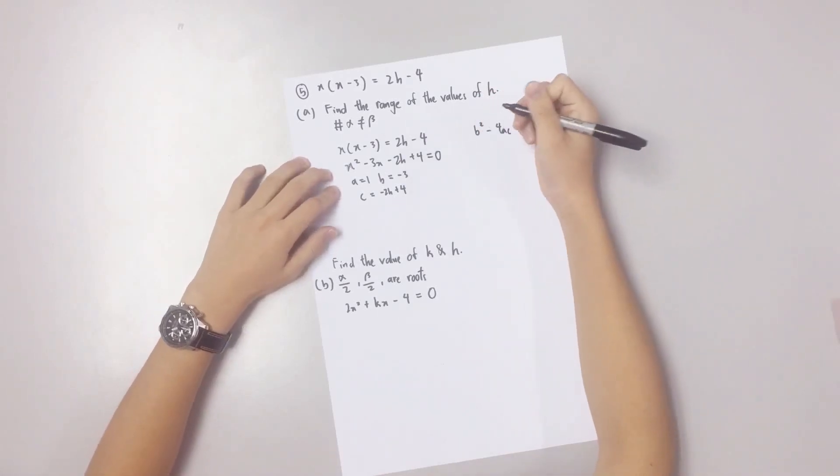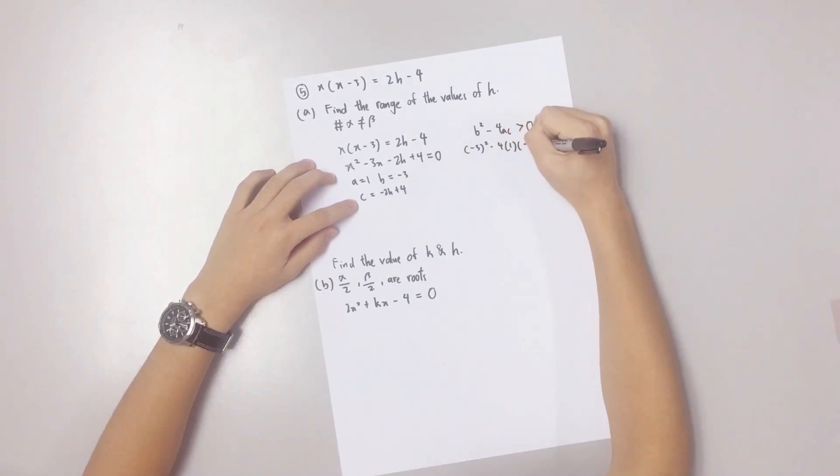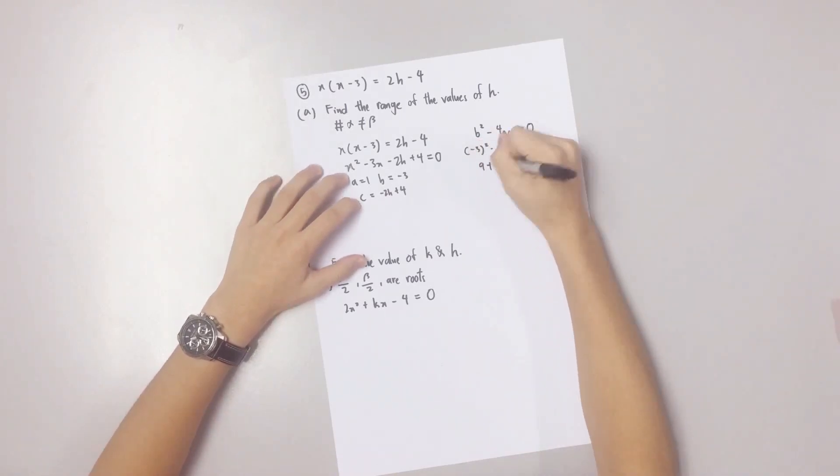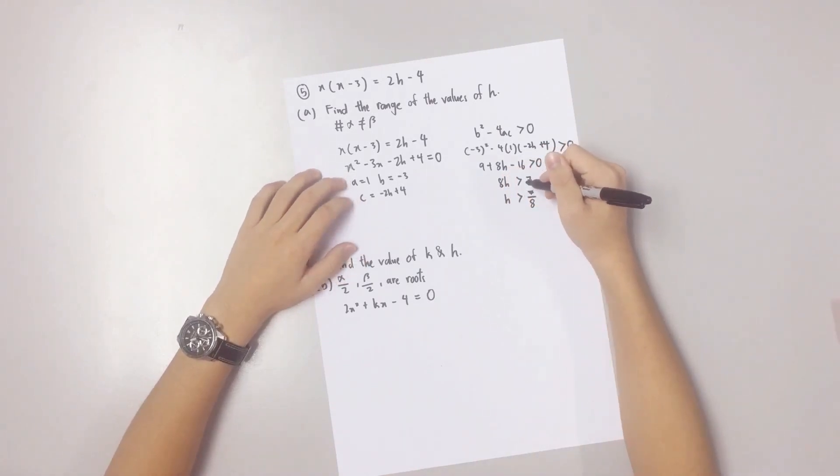Now, you substitute A, B and C into the formula and simplify it. And you get the range of the values of H. Now, let's move on to B.